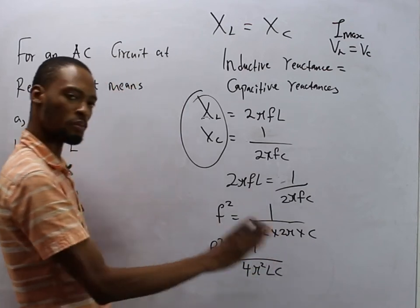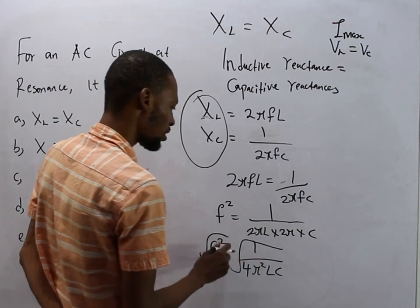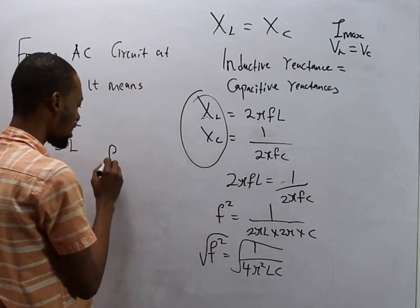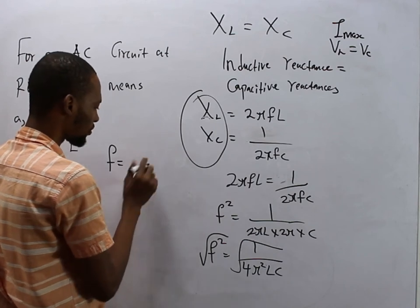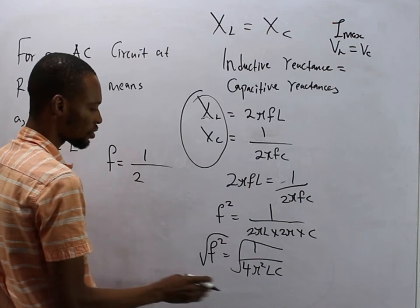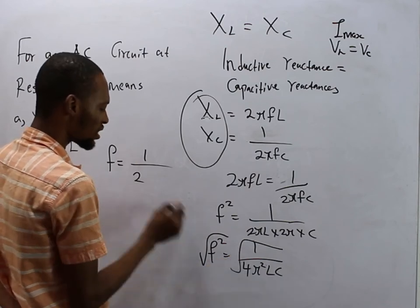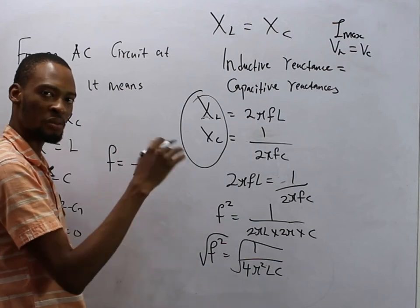Square root of both sides will give us f equals the square root of 1 is 1 over the square root of 4 is 2, the square root of π squared is π because when you square square root they cancel, so you are left with the value there and you have square root of LC.